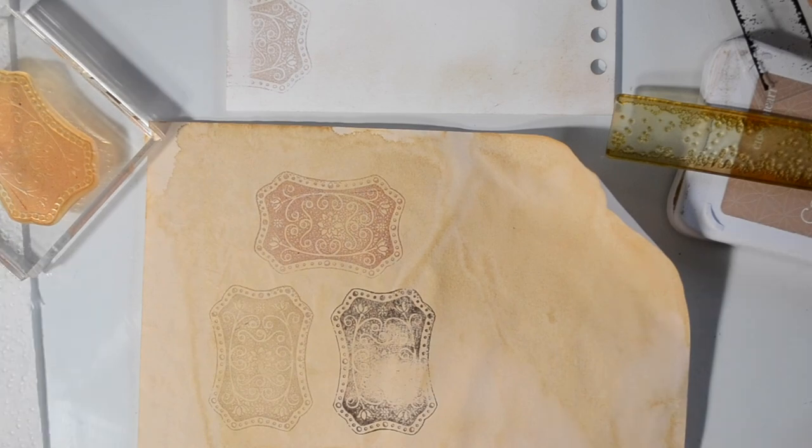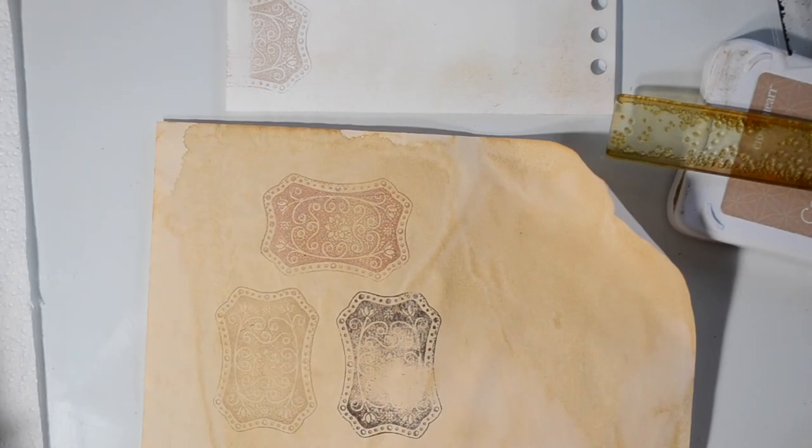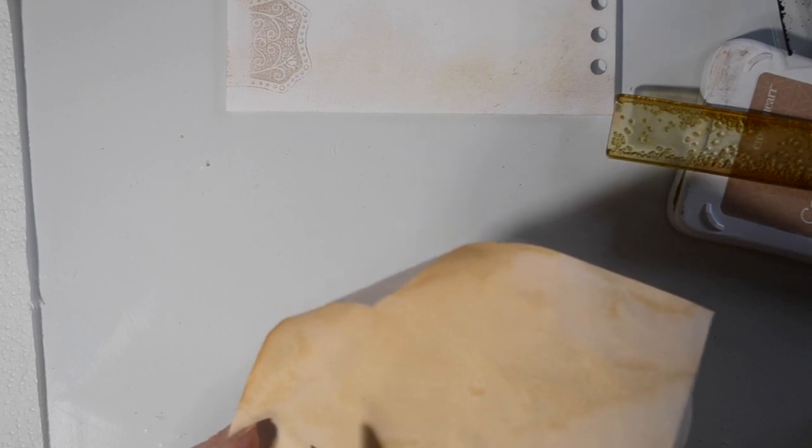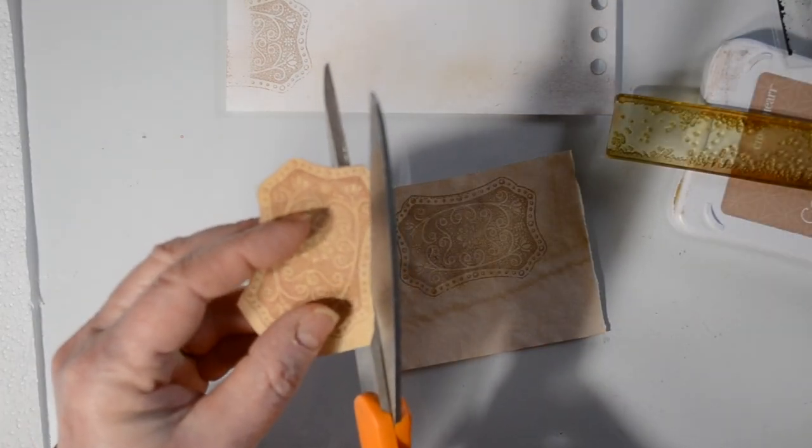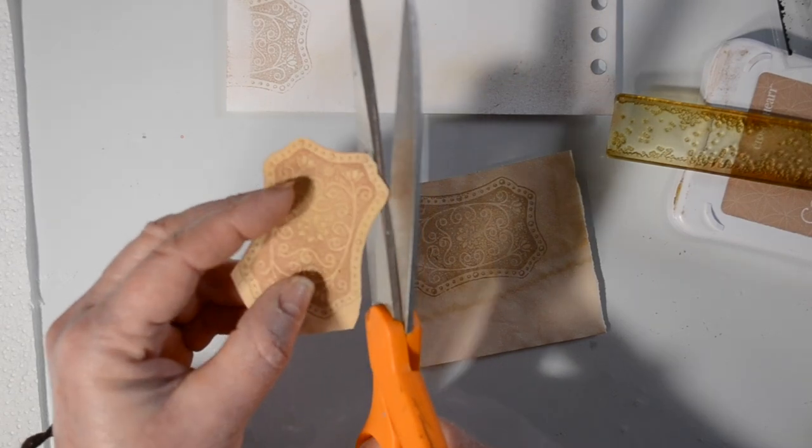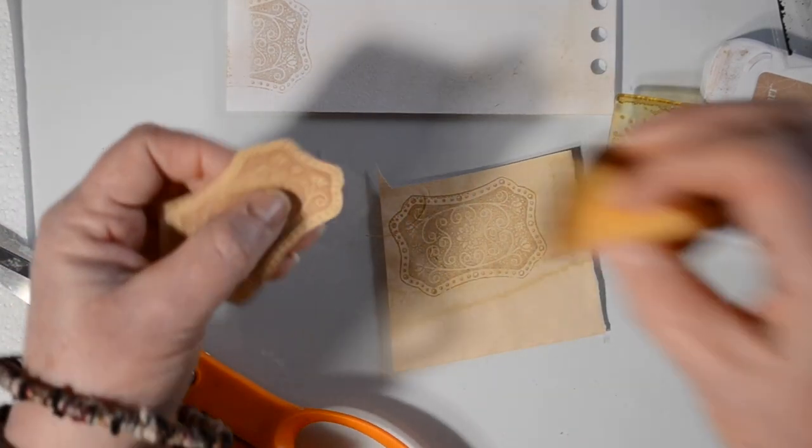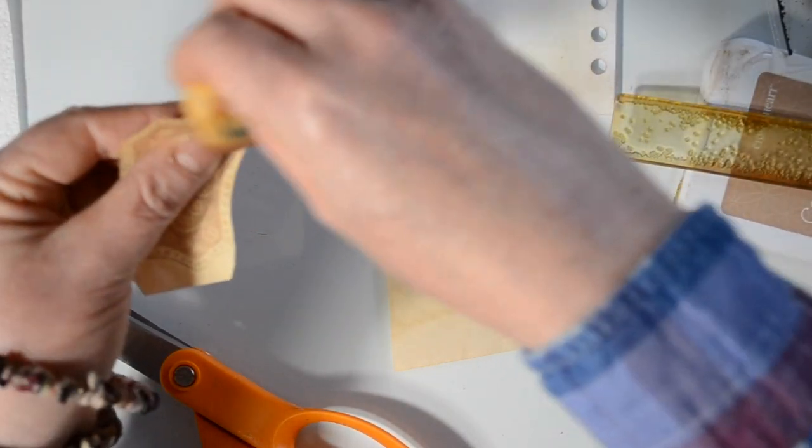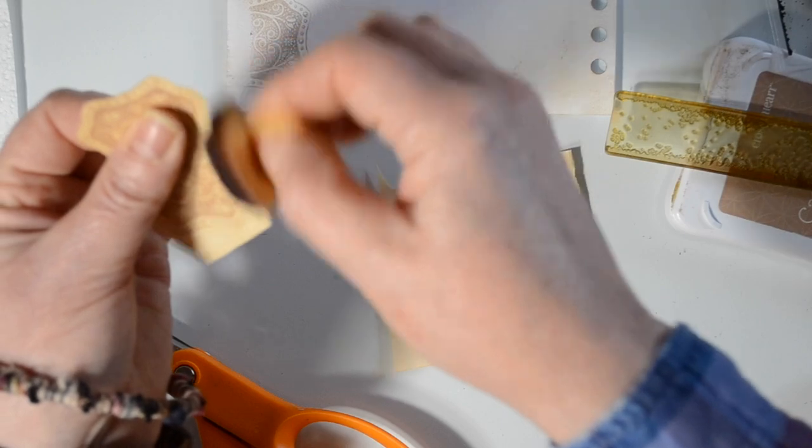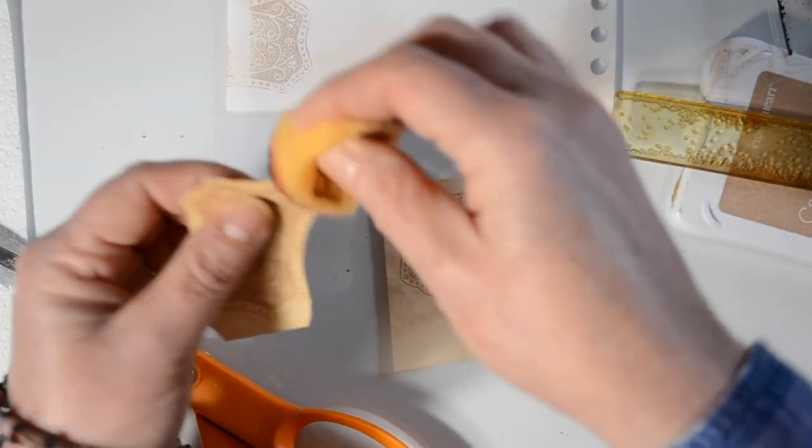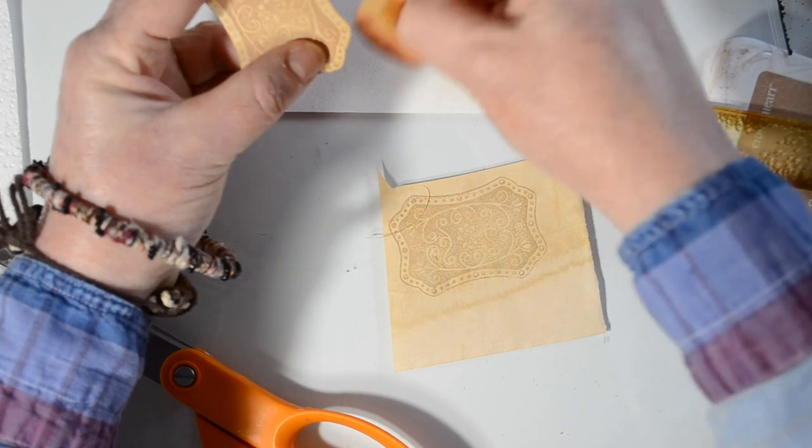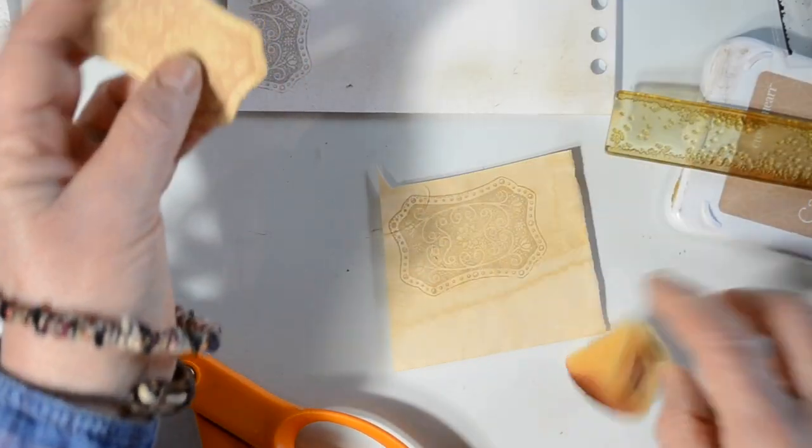Now I'm going to come in and I'm going to cut that out and through the magic of video here, you're going to see the beginning of this cut and then we're going to jump to the end of the cutting because this is about as exciting as watching paint dry. Now I'm going to come in with a sponge and I'm going to ink around the edge of this belt buckle and that'll just cover up any edges that I have and just give it a little finish to it.